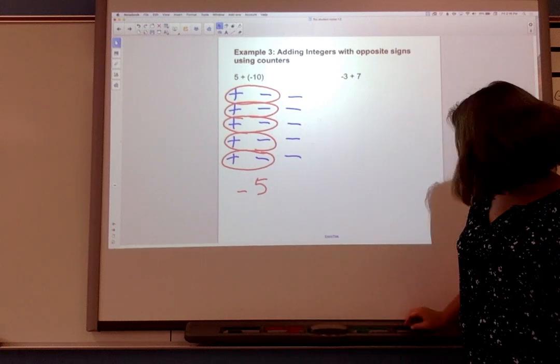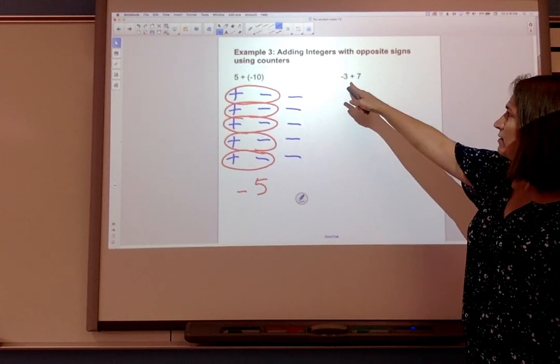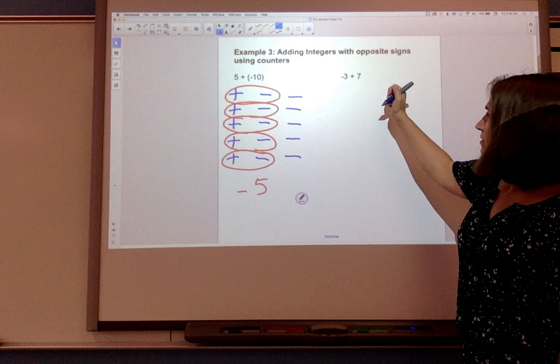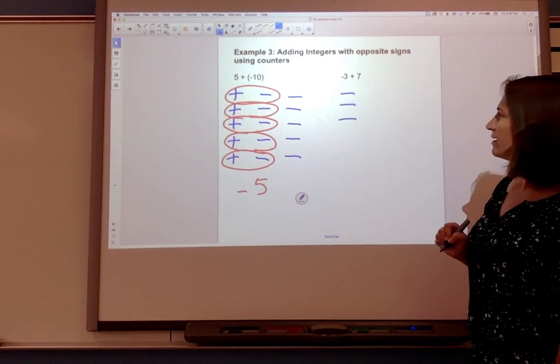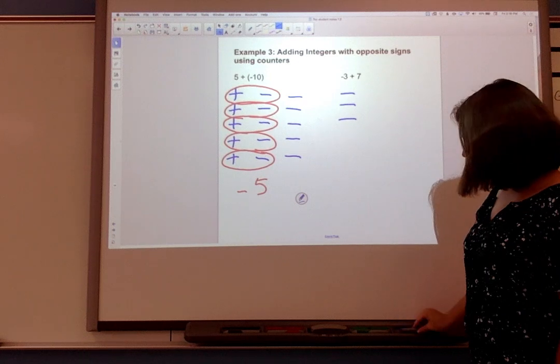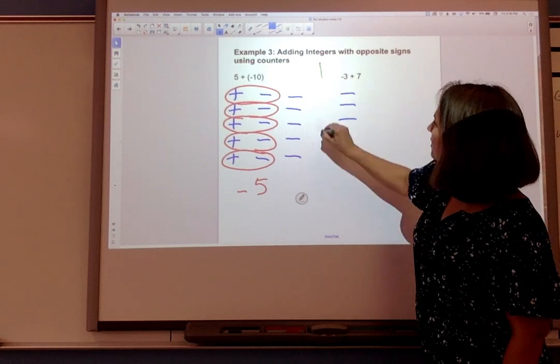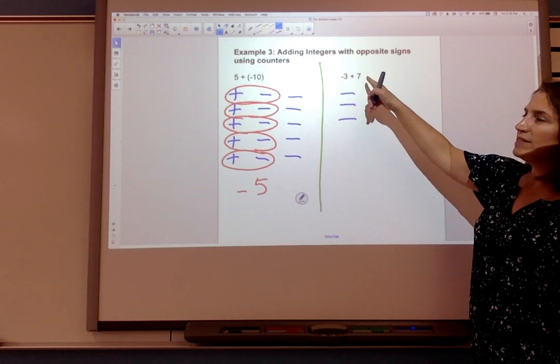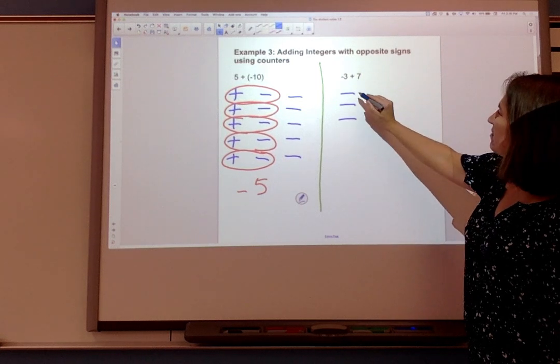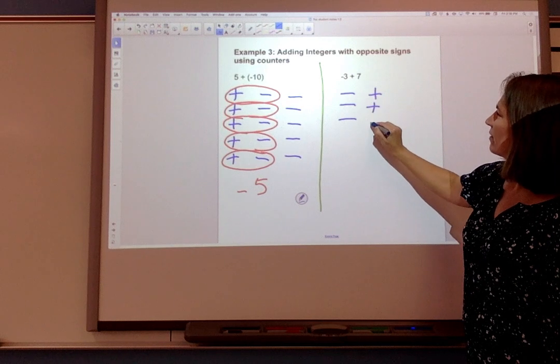Let's do another one. -3 + 7. So I'll model -3. 3 negatives. I'll put this line down the middle so we can kind of tell the difference between our problems here. Now I'm going to do 7 positives and for the first 3 I'm going to be sure I'm kind of lining up here. 1, 2, 3.